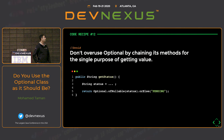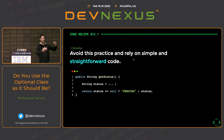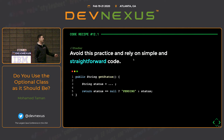Don't overuse Optional by chaining its methods just to get a single value. If you're only checking for nullability and can get a value directly, be straightforward. Chaining Optional with Optional to return another Optional just to retrieve something final makes your code complicated and reduces readability.